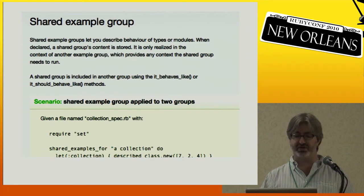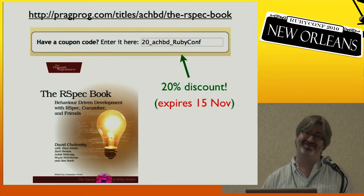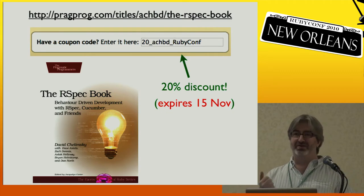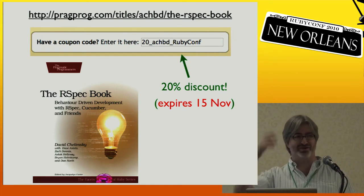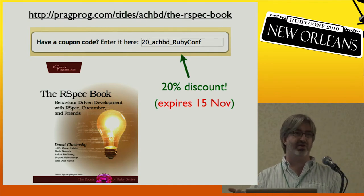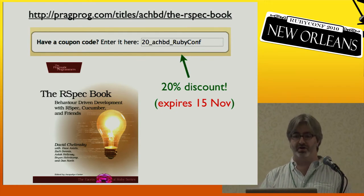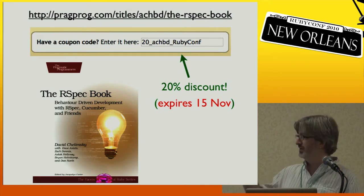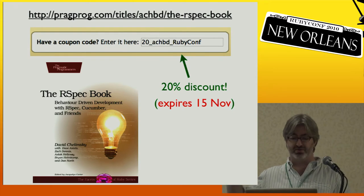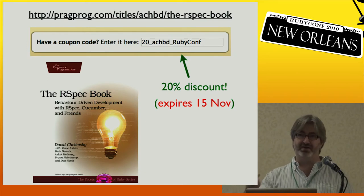Some housekeeping: the RSpec book is actually going to the printer tomorrow. Four years ago I stood up at a podium at RubyConf and said it's going to be Q1 of the coming year — and yeah, this time it's actually going to the printer. There's a discount code for the combination of the print book and the ebook: 20 underscore ACHBD underscore RubyConf in snake case. 20% discount, expires Monday. Get it while it's hot.